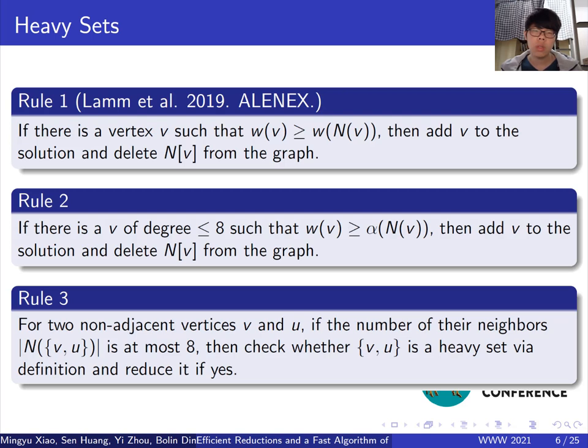Rule 3 deals with heavy sets of size 2. As Rule 2, we only consider low degree vertices here.